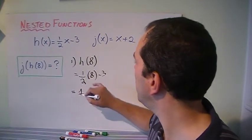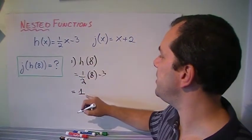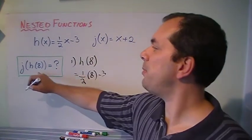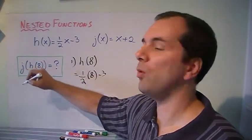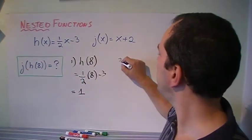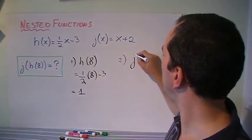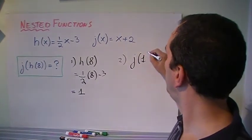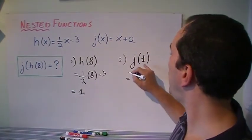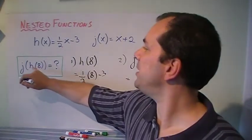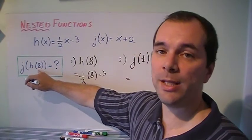So therefore, h(8) is equal to 1. So here I'm asking for what is j(1)? Because that's what h(8) is equal to.